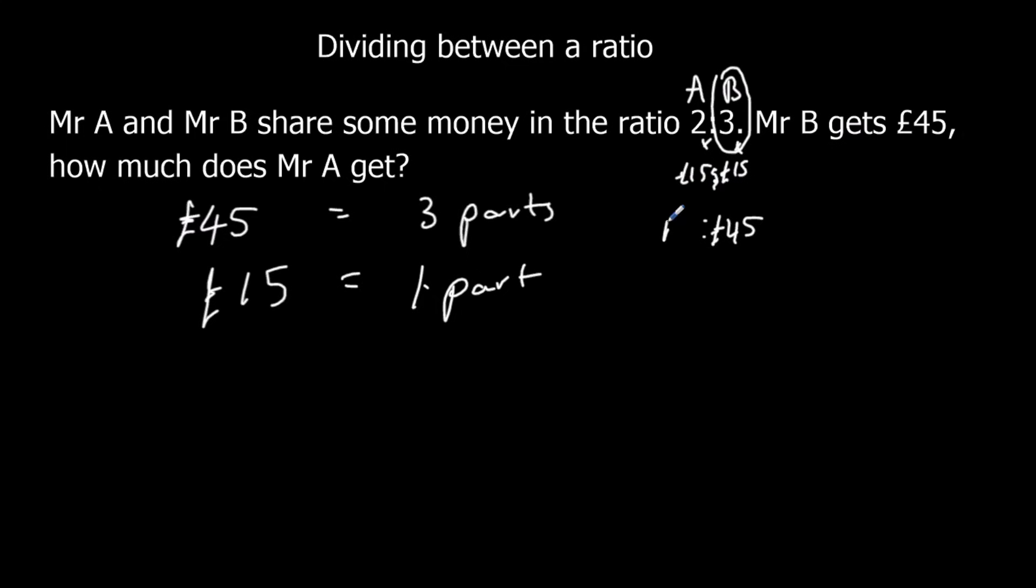So 3 fifteens were the 45 that we were told about. And 2 fifteens is 30. So Mr. A gets 30 pounds. He gets 2 parts. 2 fifteens. So Mr. B got 3 parts. We divide by 3. We find out each one's 15. Mr. A's got 2 parts. So 2 fifteens are 30.